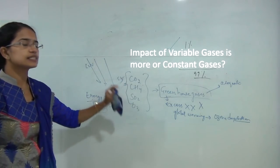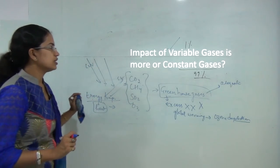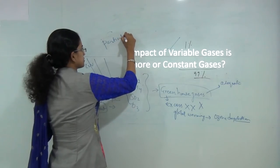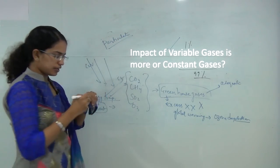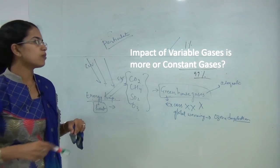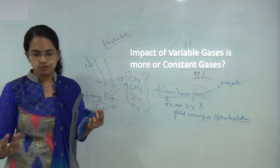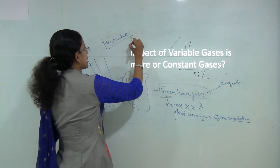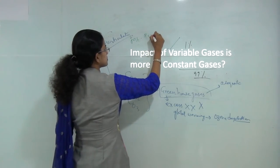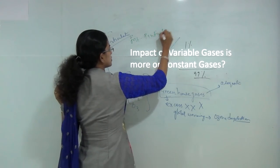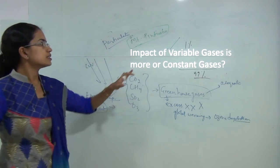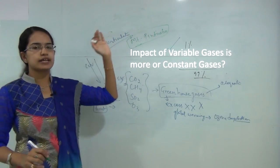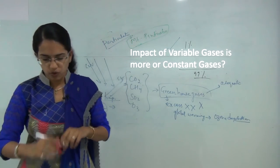Besides variable gases, there is particulate matter also present in the atmosphere. These occur in the form of volcanic ash, rain particles, and snow. An interesting case is Mount Pinatubo, where volcanic ash — a particulate matter — remained in the atmosphere for more than one year.